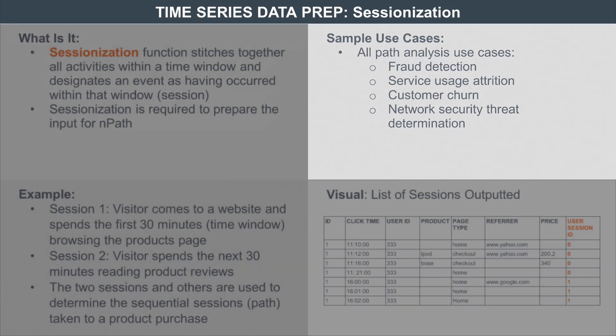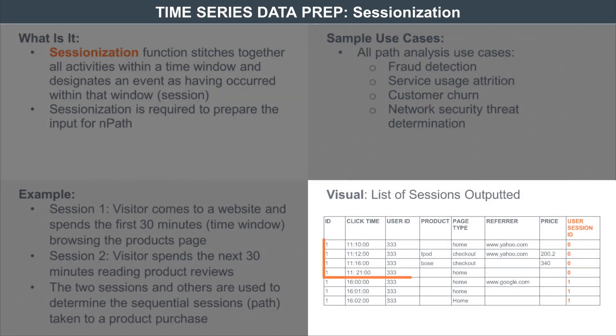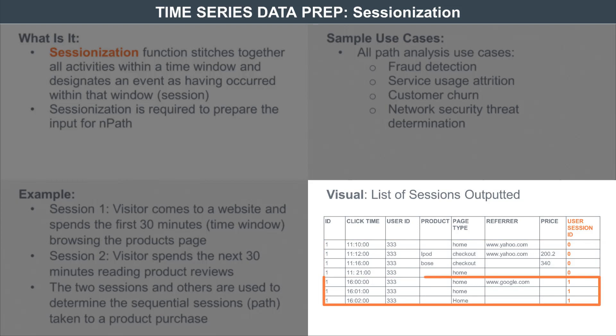To determine the sequence you need something like sessionization. Here's an example: someone starts with a certain time at which they click, and if those activities — home, checkout, and checkout again back to home — happen within 30 minutes, that's one session, which is why it's session zero. Then there's another set of activities where somebody stayed on the home page for 30 minutes, so that's given session ID one. You simply put a certain time window, compute whether those activities are within that window, and assign a number — that's what sessionization is all about.